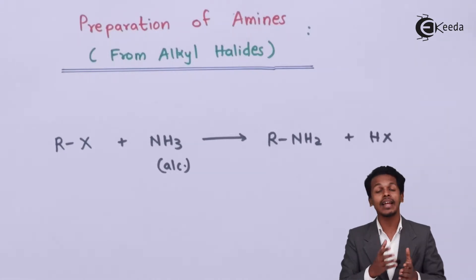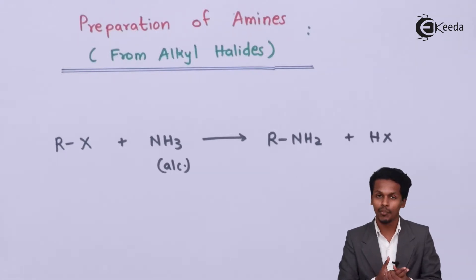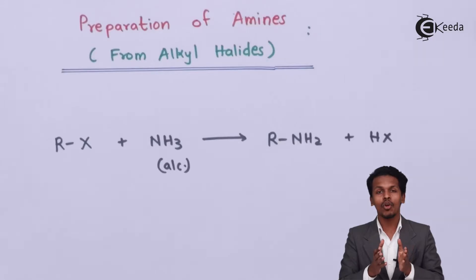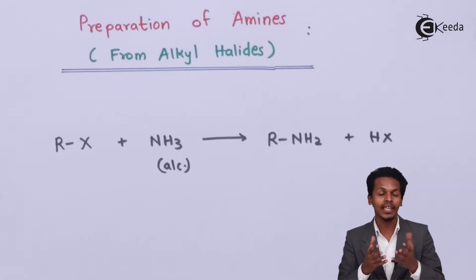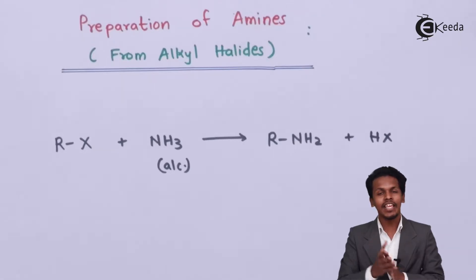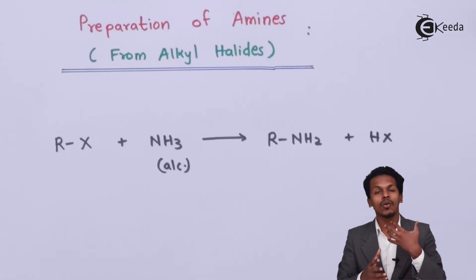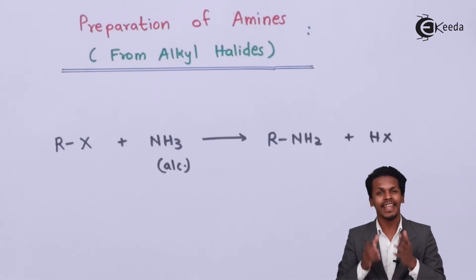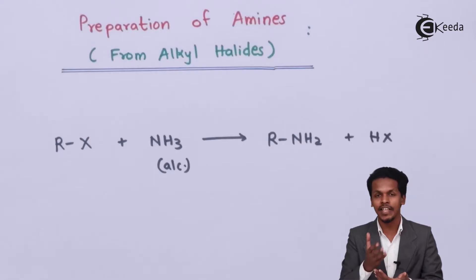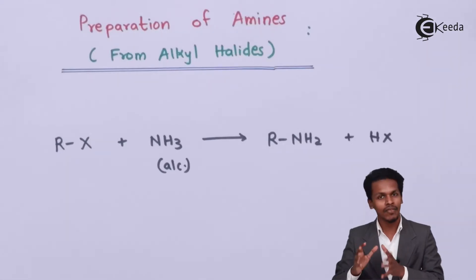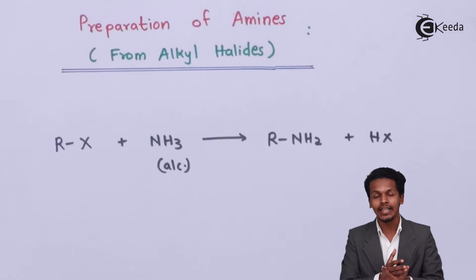Alkyl halides are reactive with ammonia. But if we talk about aryl halides — for example, chlorobenzene or any halobenzene — they are not very much reactive to ammonia. That is the reason ammonolysis does not take place there, which is why we are only discussing the reaction of alkyl halides with ammonia.